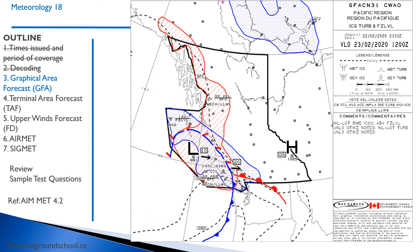For each time period the GFA has two charts: one is clouds and weather, which we just looked at; the other is turbulence and icing. On this chart, isobars are replaced with freezing level lines. The freezing level along this line is 5,000 feet. This red area with the symbol indicates moderate turbulence from the surface to 3,000 feet AGL — mechanical and low-level wind shear.